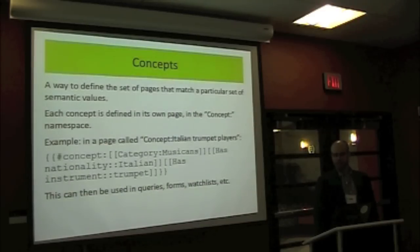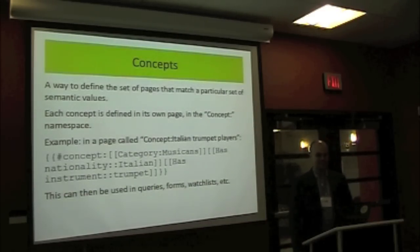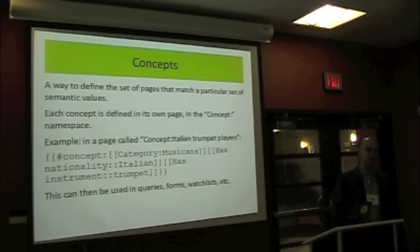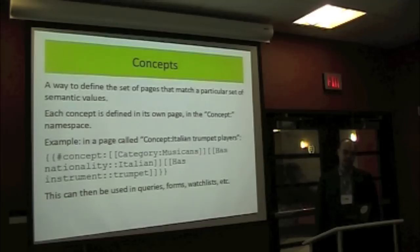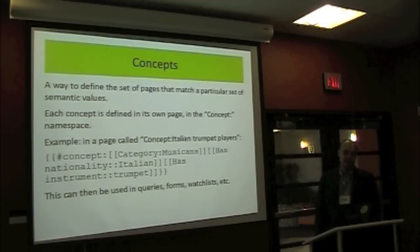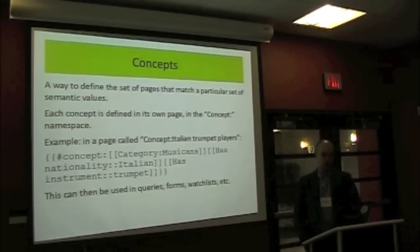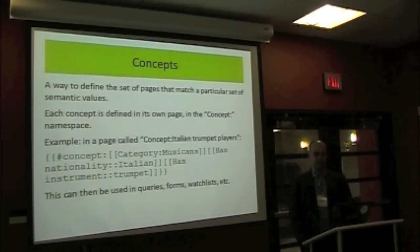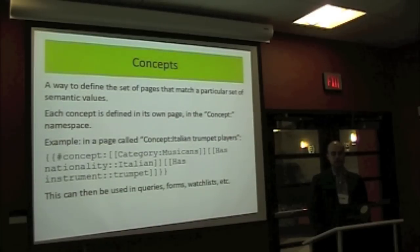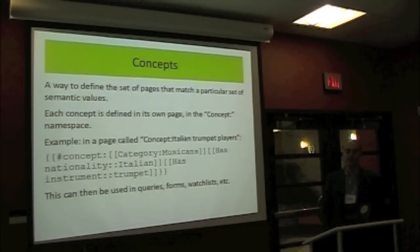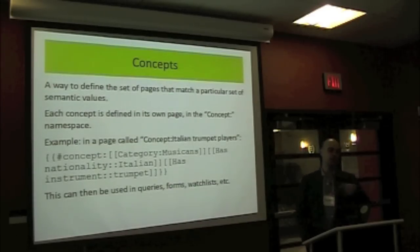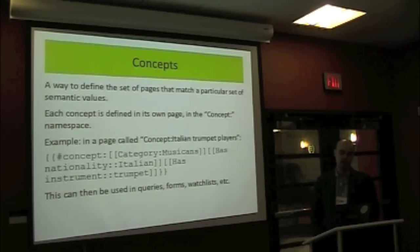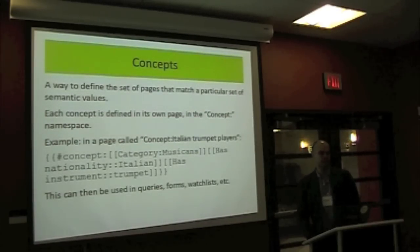Concepts are a somewhat obscure Semantic MediaWiki feature. They provide a way to define a set of pages matching a certain set of conditions — a lot like categories, but dynamically constructed. You can create a concept called 'Italian trumpet players,' passing in conditions using the same format as an ask query, and that defines a set of pages. Those can then be used in another query just as you would with a category, and they have specific uses for forms, watchlists, and other things.